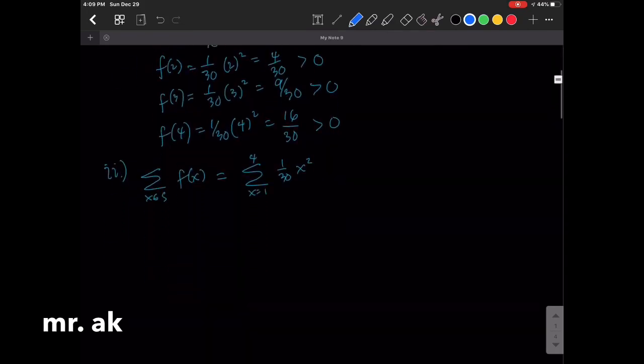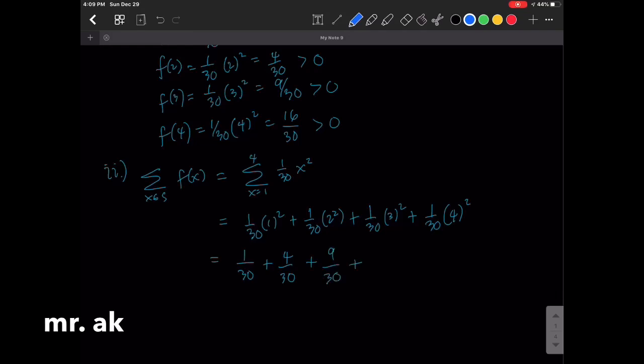This is equal to 1 over 30 times 1 squared, plus 1 over 30 times 2 squared, plus 1 over 30 times 4 squared. This is 1 over 30, this is 4 over 30, this is 9 over 30, this is 16 over 30.